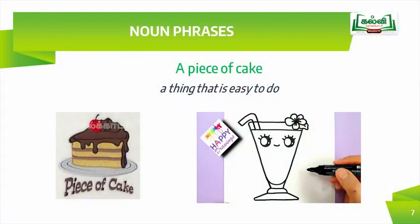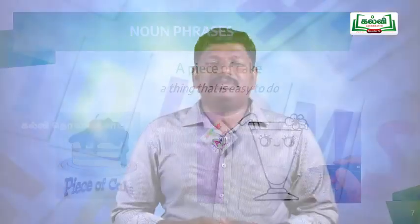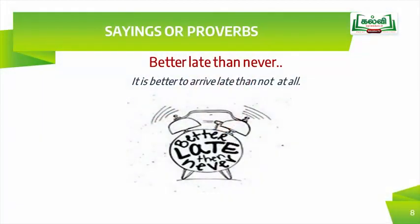The next type of idiom is noun phrases. Look at the example: 'a piece of cake.' As we know, every idiom has an idiomatic meaning. 'A piece of cake' does not refer to a single piece of cake — it means a thing that is easy to do. For example, drawing is a piece of cake for my friend.